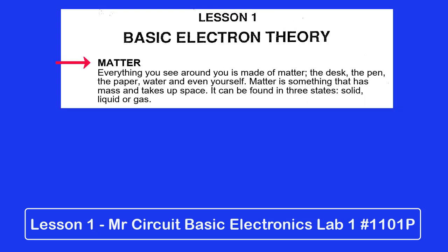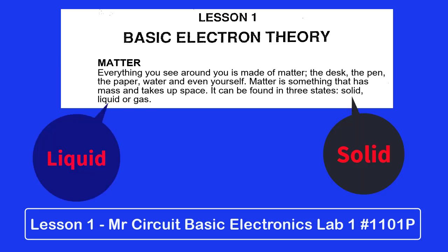Matter. Everything you see around you is made of matter - the desk, the pen, the paper, water, and even yourself. Matter is something that has mass and takes up space. It can be found in three states: solid, liquid, or gas.